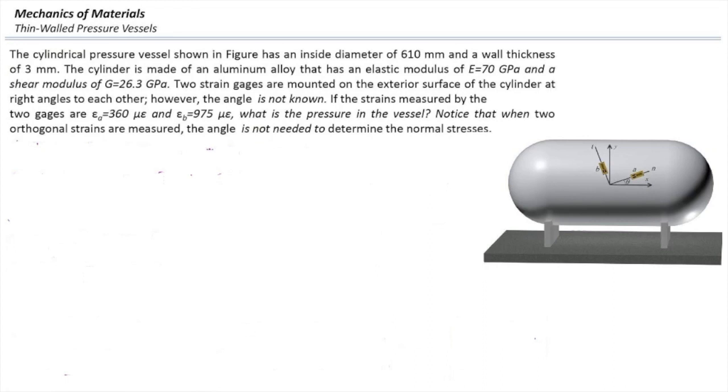If the strains measured by the two gauges are 360 and 975, what is the pressure in the vessel? Note that when two orthogonal strains are measured, the angle is not needed for determining the normal stresses.